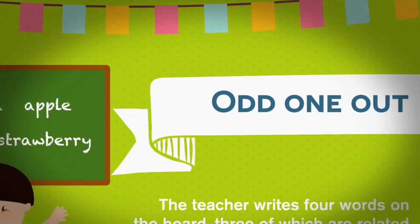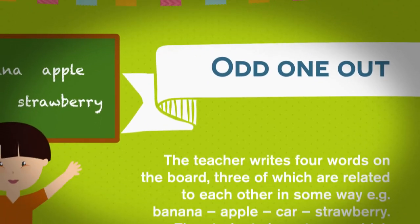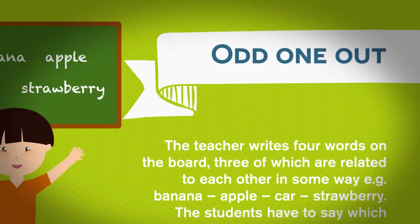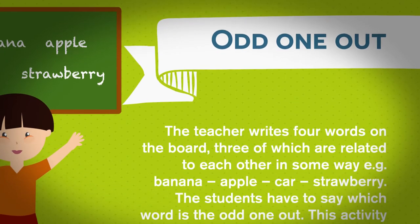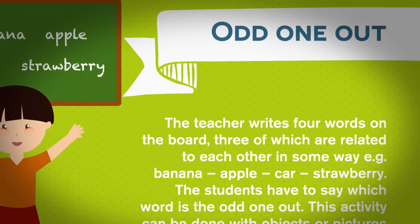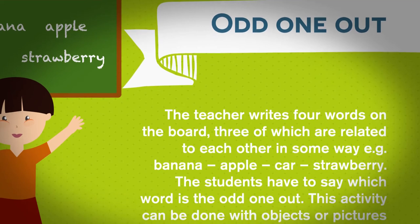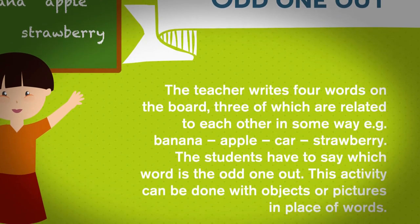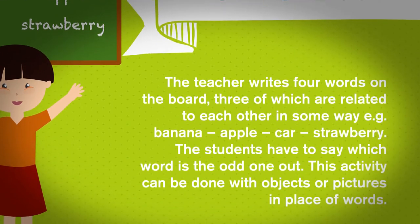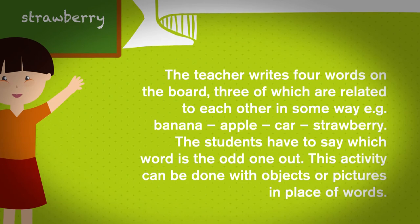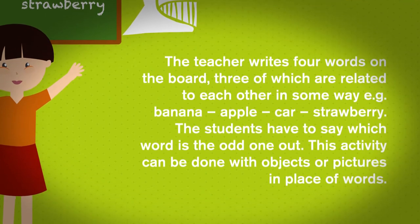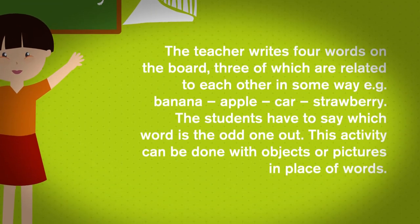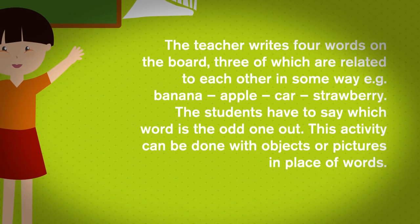Odd one out. The teacher writes four words on the board, three of which are related to each other in some way. For example, banana, apple, car, strawberry. The students have to say which word is the odd one out. This activity can be done with objects or pictures in place of words.